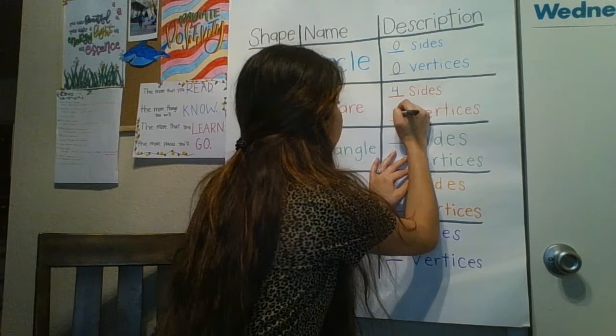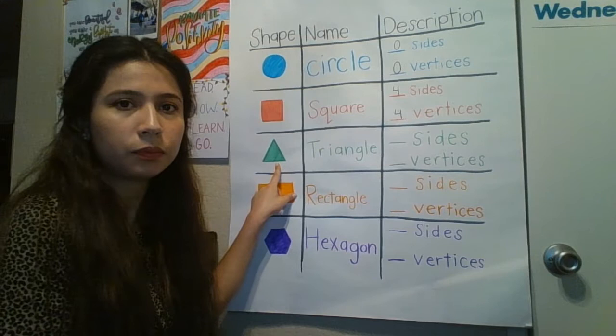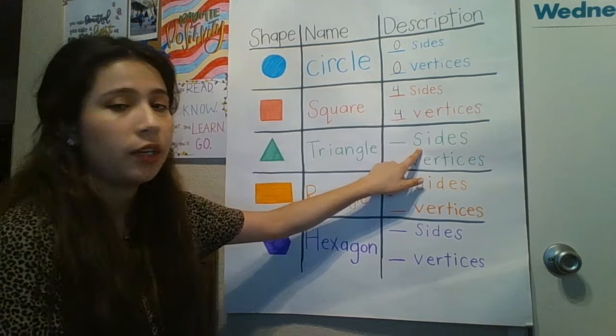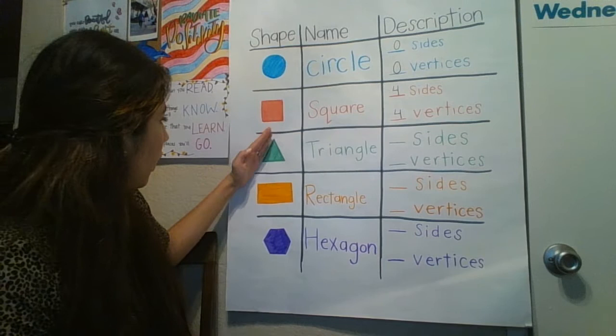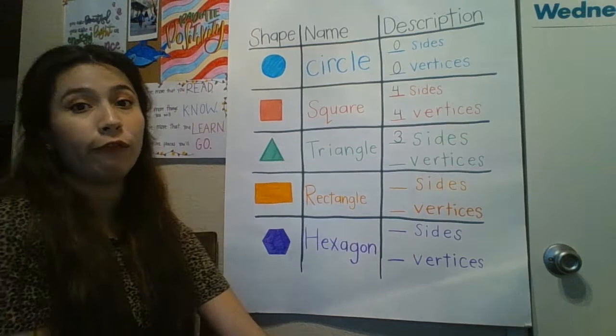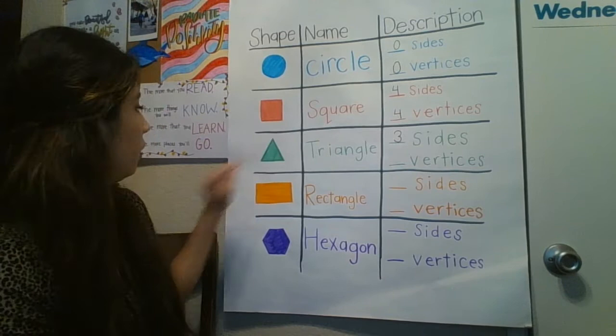The next one is a triangle. Let's look at the triangle. This is the word triangle: T-R-I-A-N-G-L-E. Let's look at the number of sides. Let's count: here's one, two, three. How many sides in a triangle? Three sides. Now let's look for vertices. How many corners do you see? Count with me: one, two, and three. Good job.